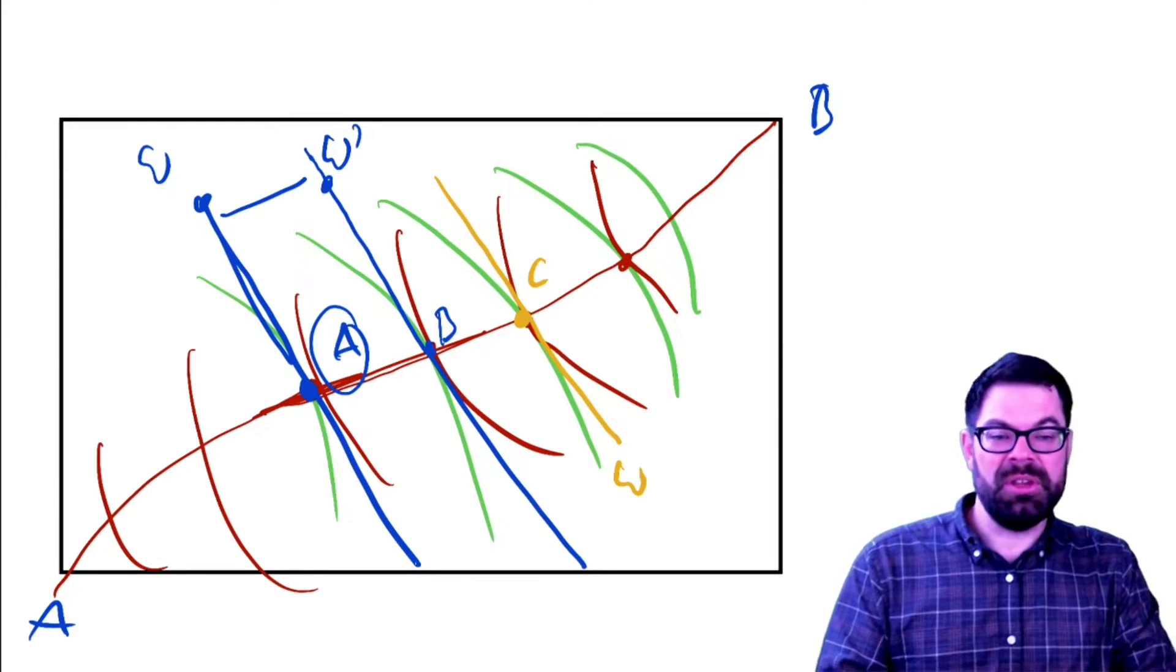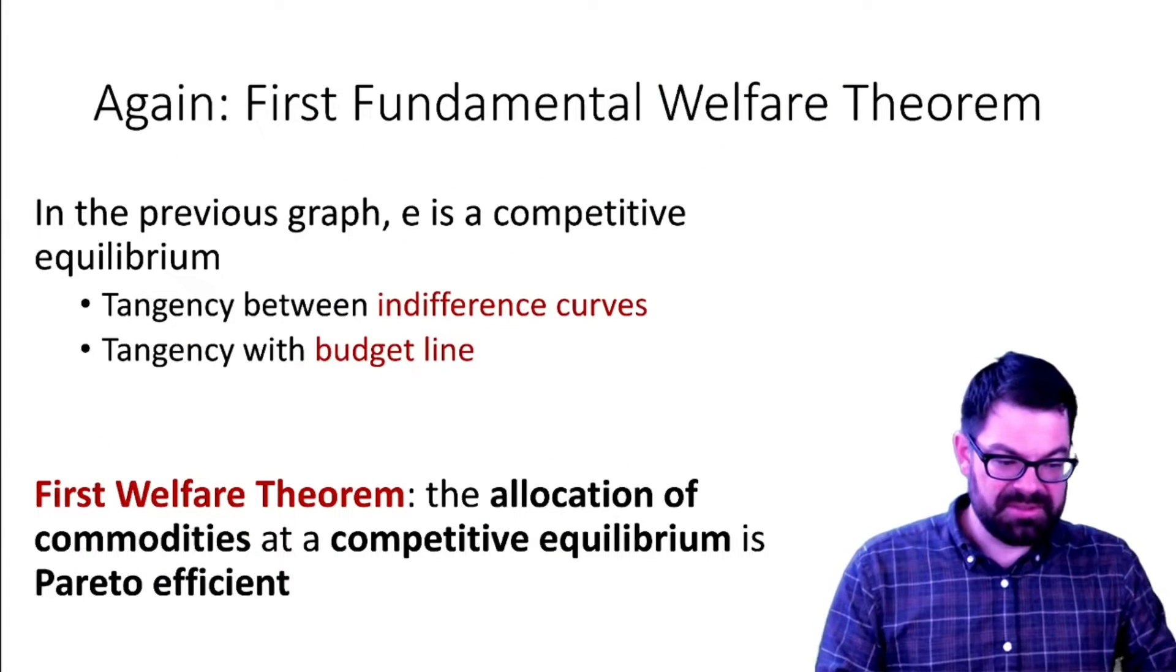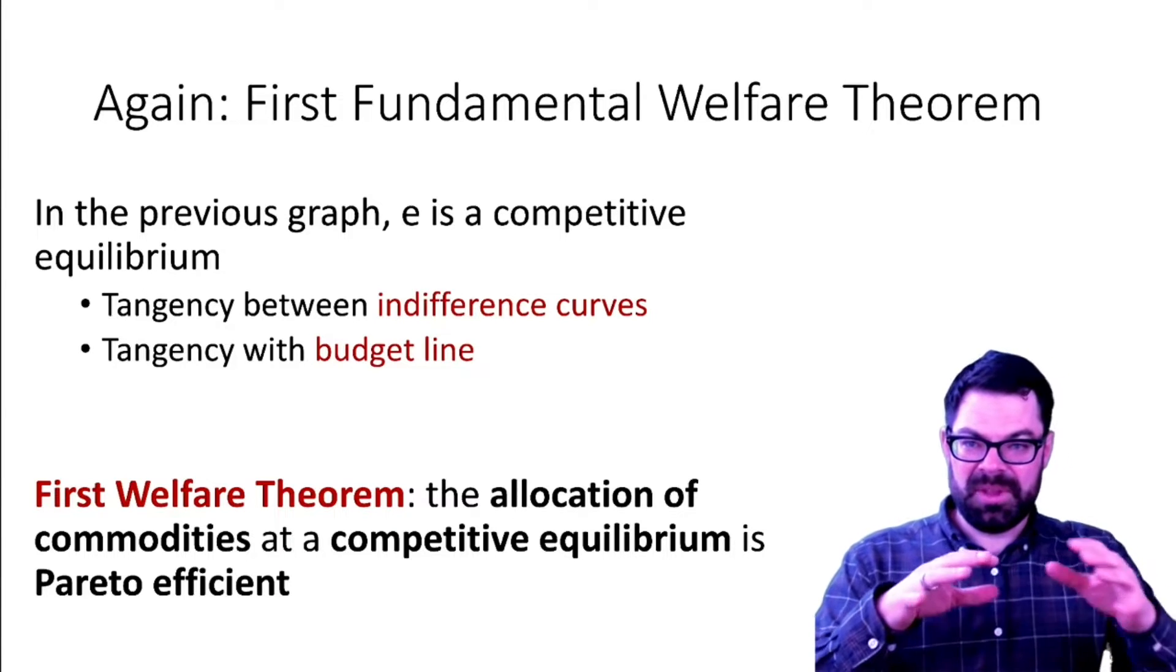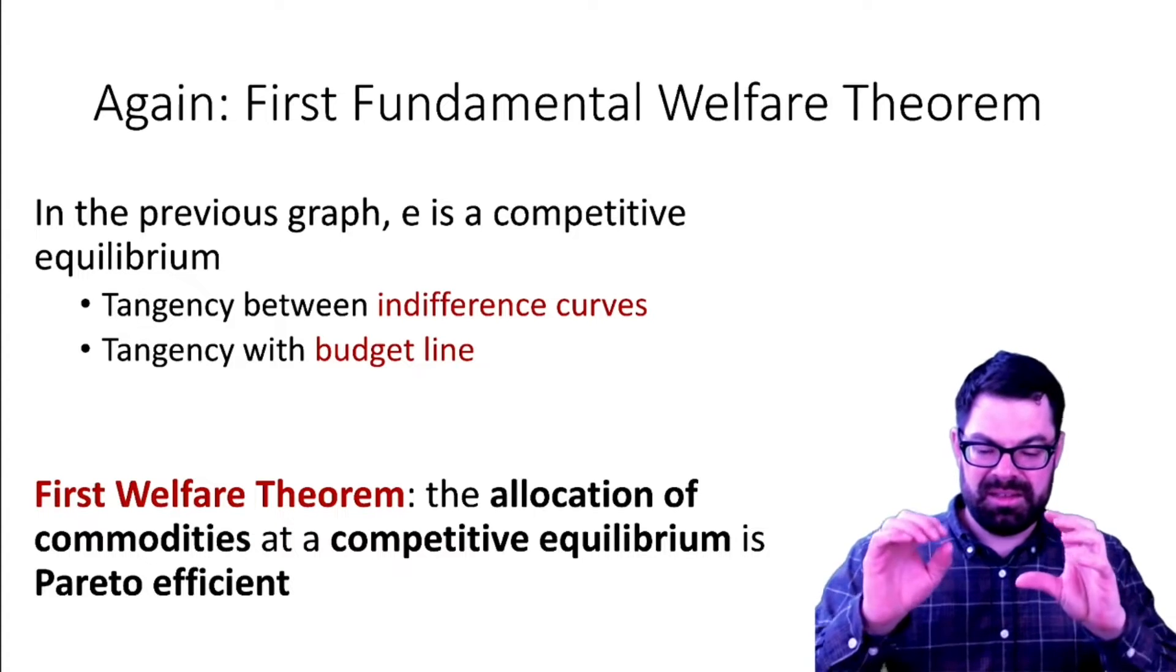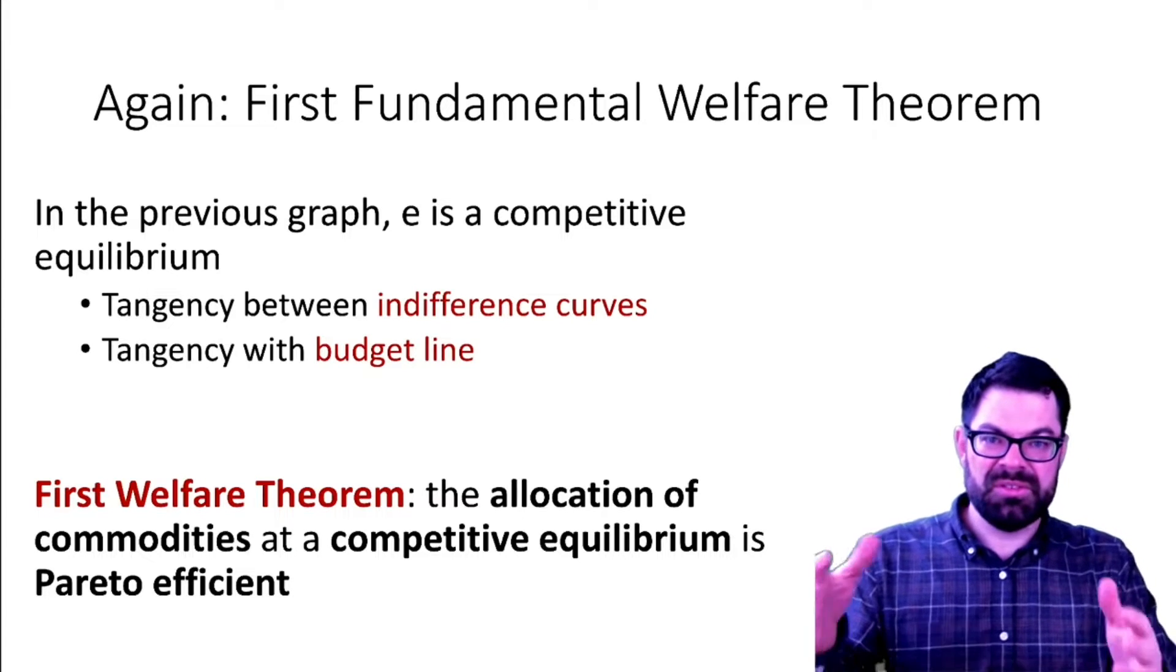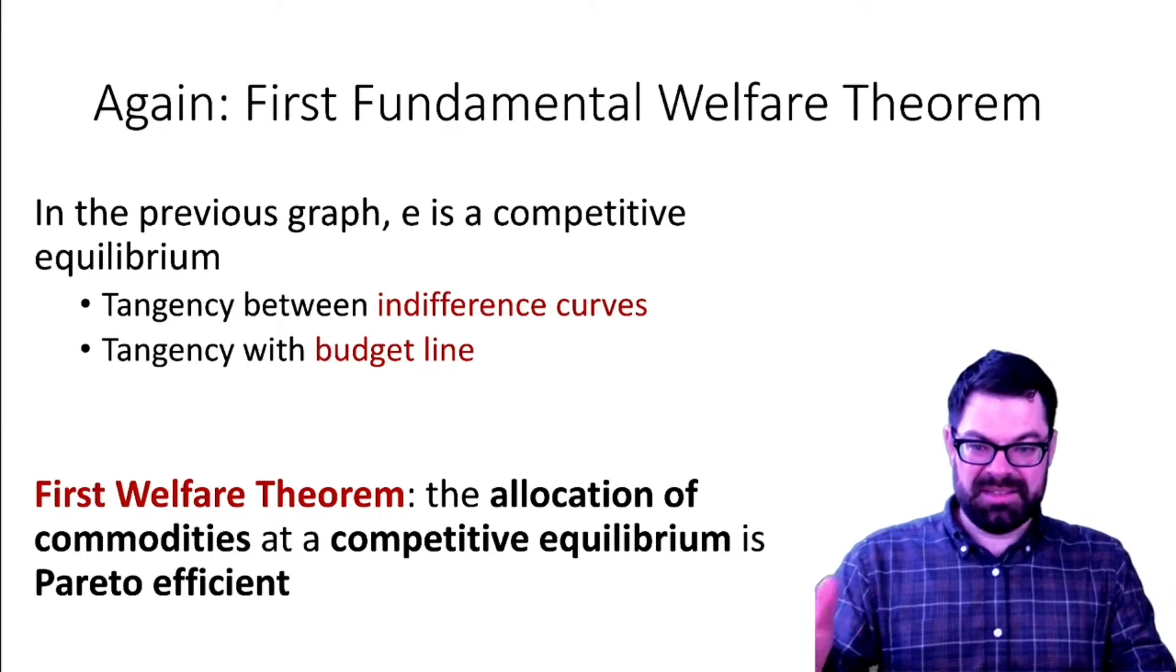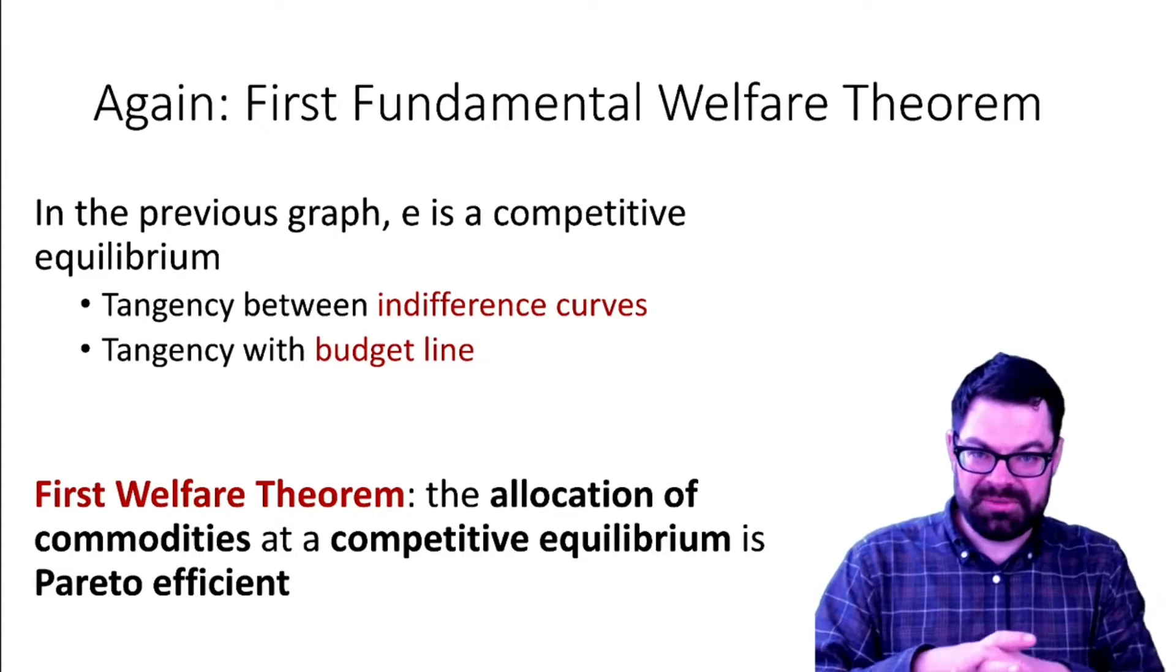What the first welfare theorem doesn't tell us is what would be from a societal perspective, the most desirable allocation of consumption and how we would reach that. But there is a second welfare theorem and that will be the topic of the next video. But just to reiterate here, what the first fundamental welfare theorem tells us is that if we have no intervention in a market, we actually attain an outcome that is efficient.